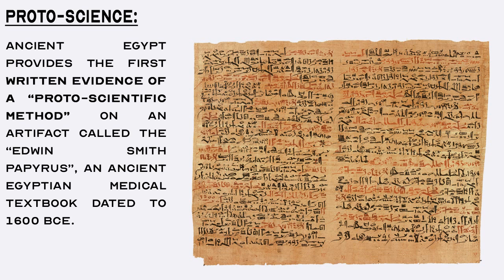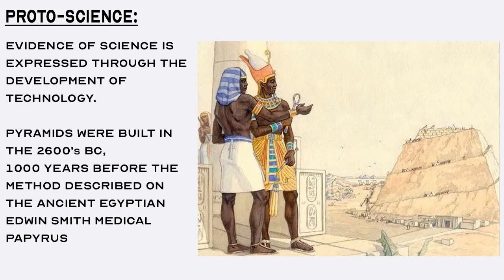It is important to note that, although this papyrus describes steps similar to the modern scientific method, it is dated to 1600 BC and should not be considered the mark of the beginning of science. Science has evolved along with humans, and evidence of it is expressed through the development of technology. Pyramids were built literally a thousand years before the method described on the Edwin Smith Papyrus. The Step Pyramid of Djoser, designed by architect Imhotep, and the Great Pyramid of Giza are dated to 2600 BC — clearly the ancient Egyptians had a systematic method of gaining knowledge about the natural world in order to build the pyramids, expressed through their technology, even before we have the inscription of the method on the papyrus.